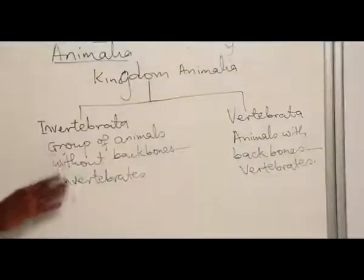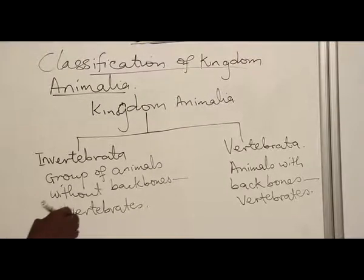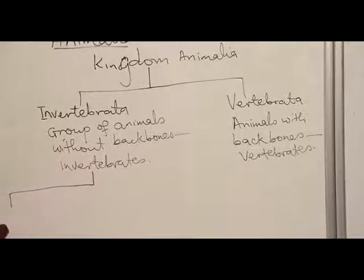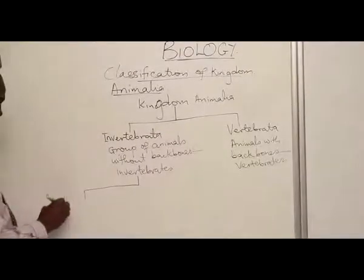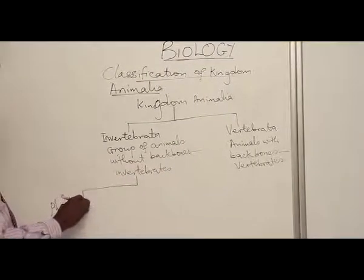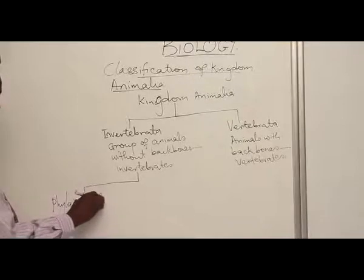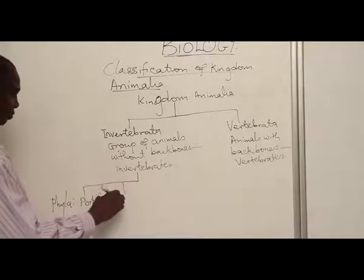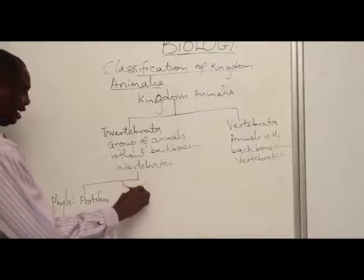Each of these is subdivided into phyla. For instance, Invertebrates are subdivided into phyla. The phyla are Porifera. We have phylum Coelenterata.